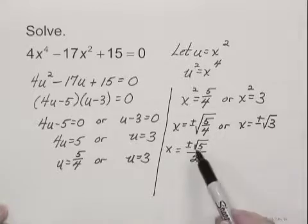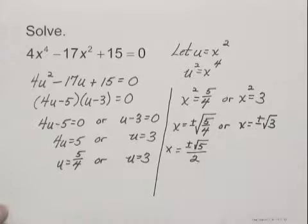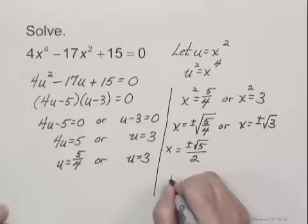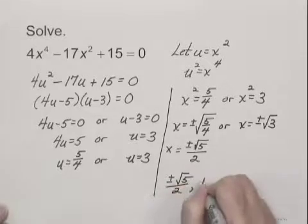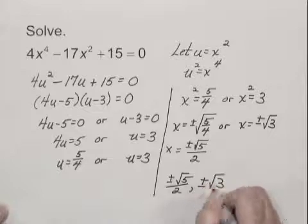These are actually 4 solutions, 2 here and 2 here. They all check, and there are the solutions. The solutions would be plus or minus the square root of 5 over 2, and plus or minus the square root of 3.